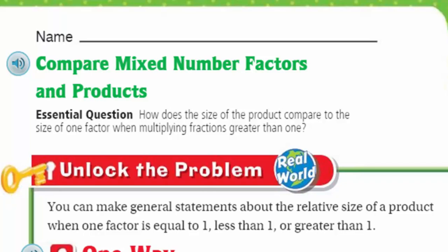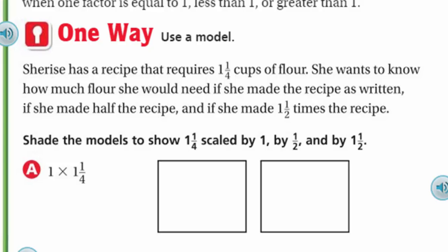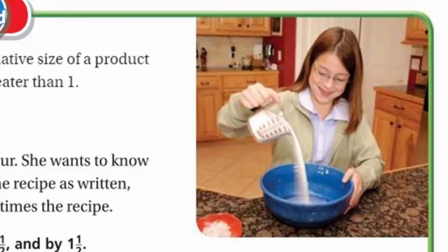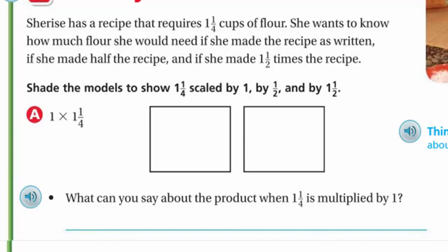Let's get started, my friends! One way is to use a model. Charisse has a recipe that requires one and one quarter cups of flour. She wants to know how much flour she would need if she made the recipe as written, if she made half the recipe, and if she made one and a half times the recipe. It says shade the models to show one and one quarter scaled by one, by one half, and by one and a half.